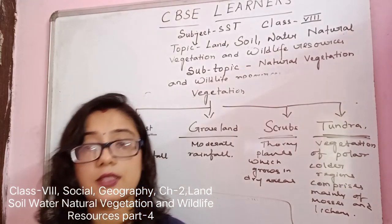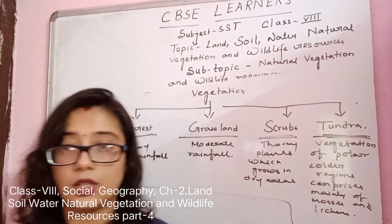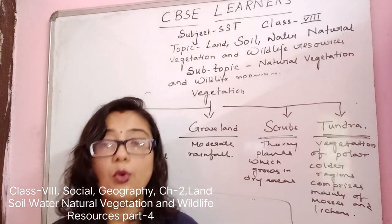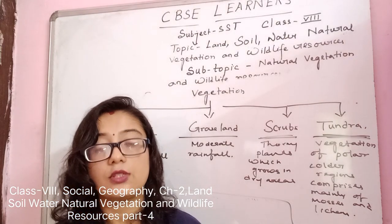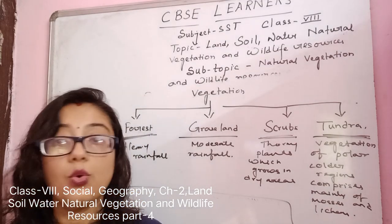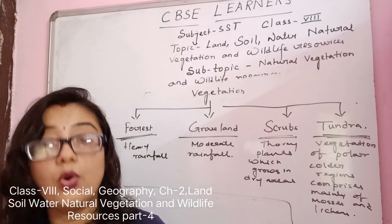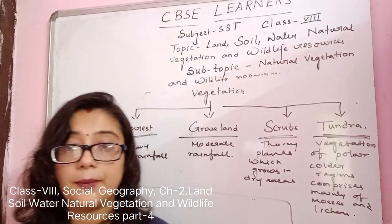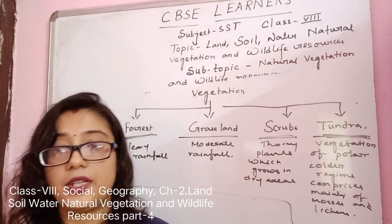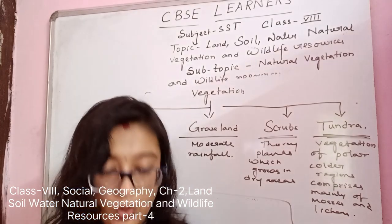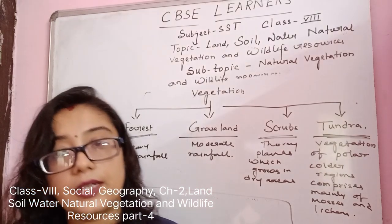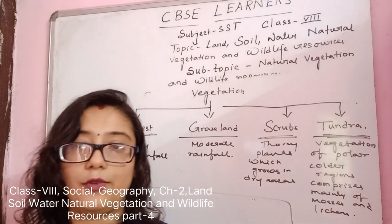Since forests are decreasing, wild animals like tigers and elephants and birds which reside in those forest areas are also becoming endangered or extinct. If they don't have homes or food, how will they survive? Their food and shelter come from the forest. The deforestation of forest is creating damage to the environment and is a threat for the environment.